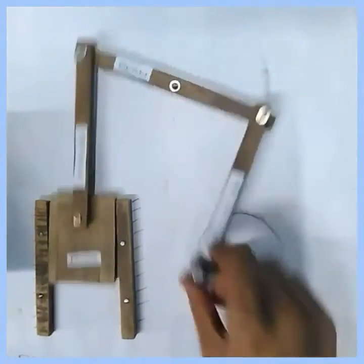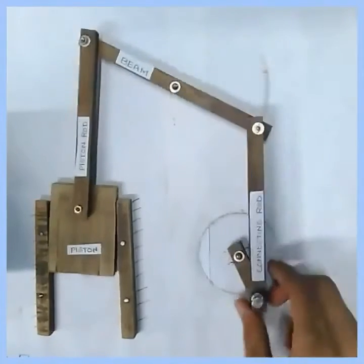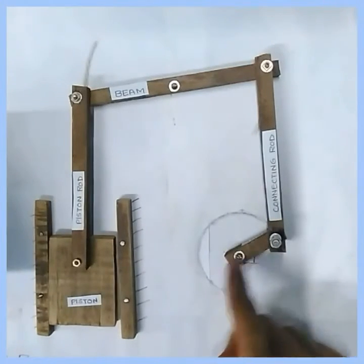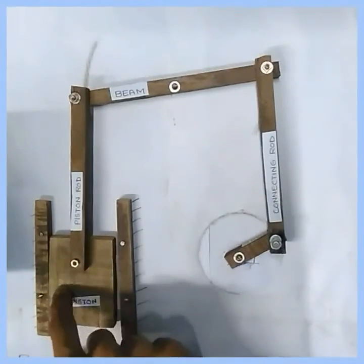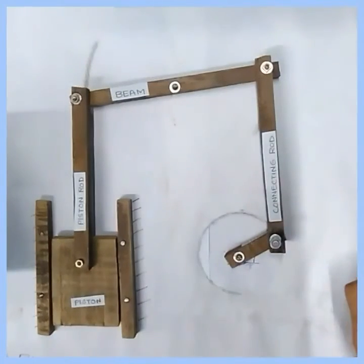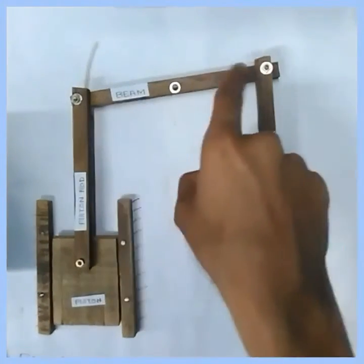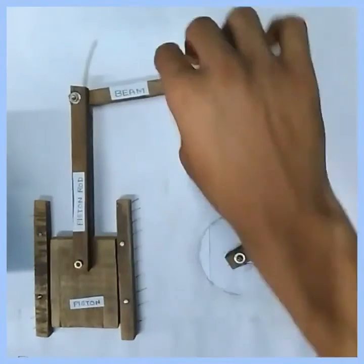The rotational motion of this crank is simply converted into translational motion of this piston. If you will notice carefully, you will find that this link simply looks like a beam oscillating like this.